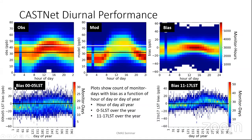We can break the observations down into those from 0 to 5am local standard time and 11 to 17 local standard time, and look at those as a function of day of year. In the spring we tend to be low biased. As we move into the summer, we're unbiased or even a little high biased in the morning hours. In the afternoon hours we're relatively unbiased, a little low biased in the spring, and more high biased moving into summer.